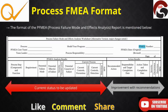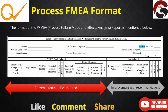The process FMEA format allows us to identify the potential failure mode and enter the severity, occurrence, and detection values to calculate the current RPN. After improvement, a second stage is completed covering recommended actions, responsibility, target completion date, and actions taken. The RPN is then recalculated by re-entering severity, occurrence, and detection. This is the standard format for process FMEA.